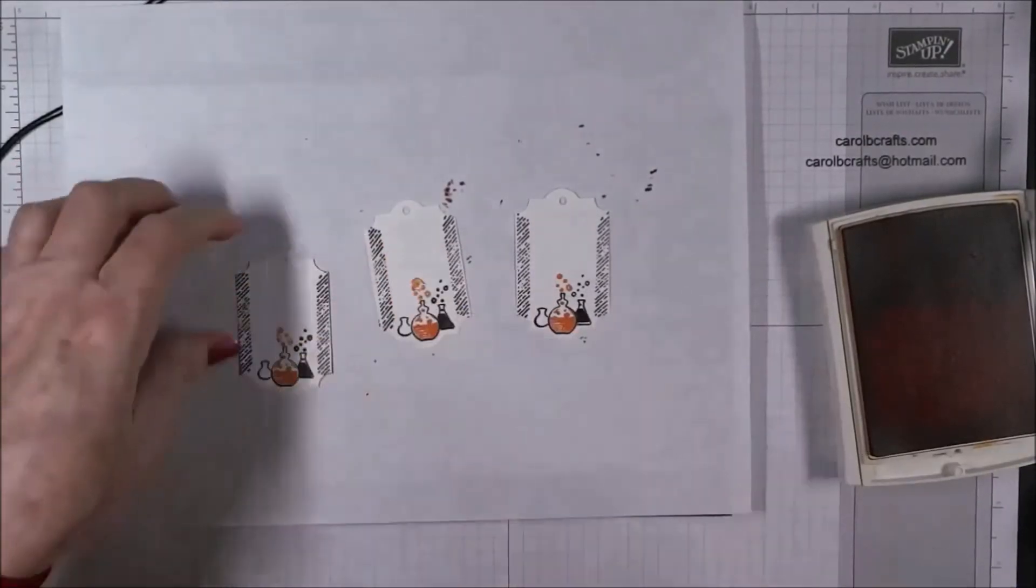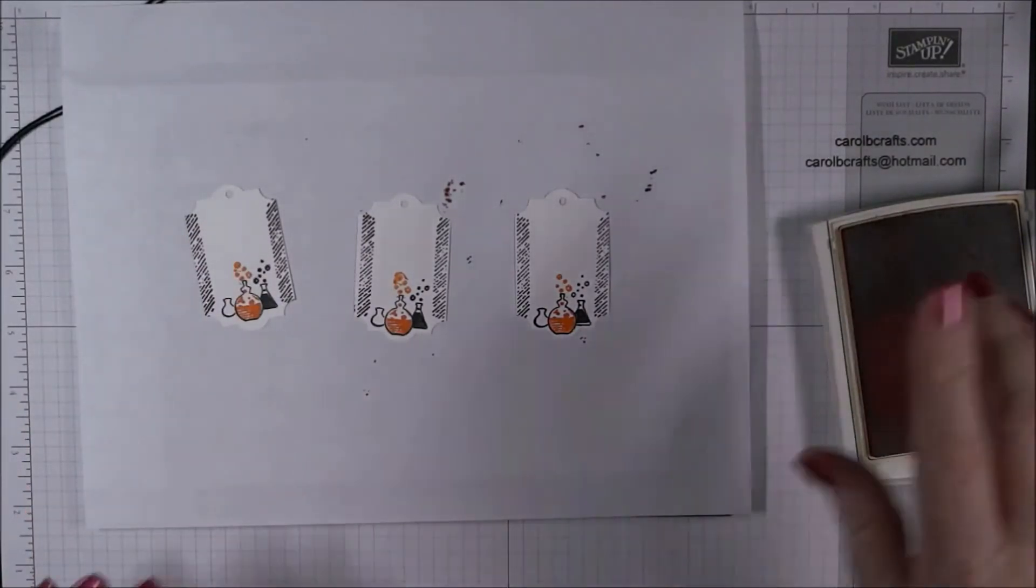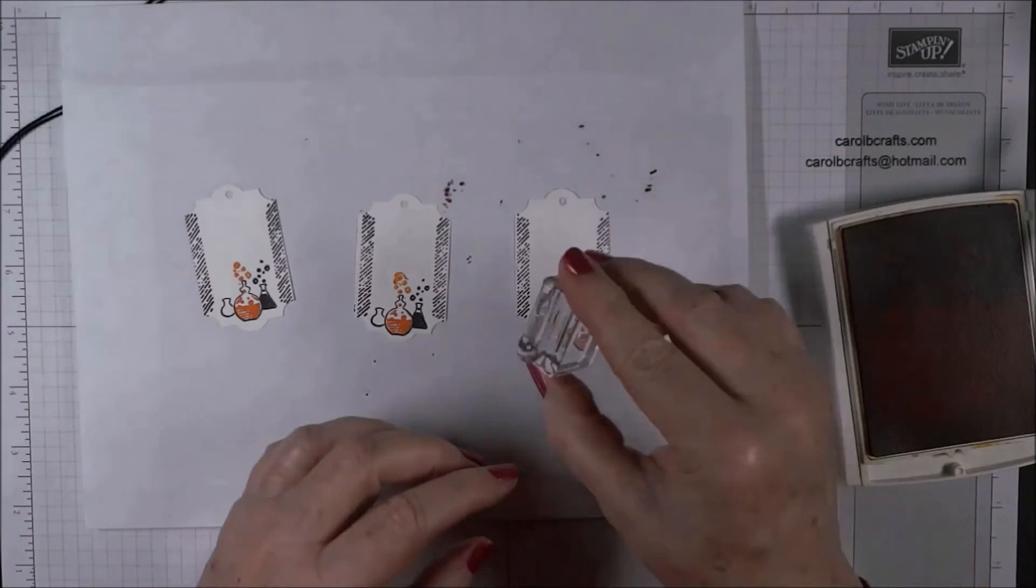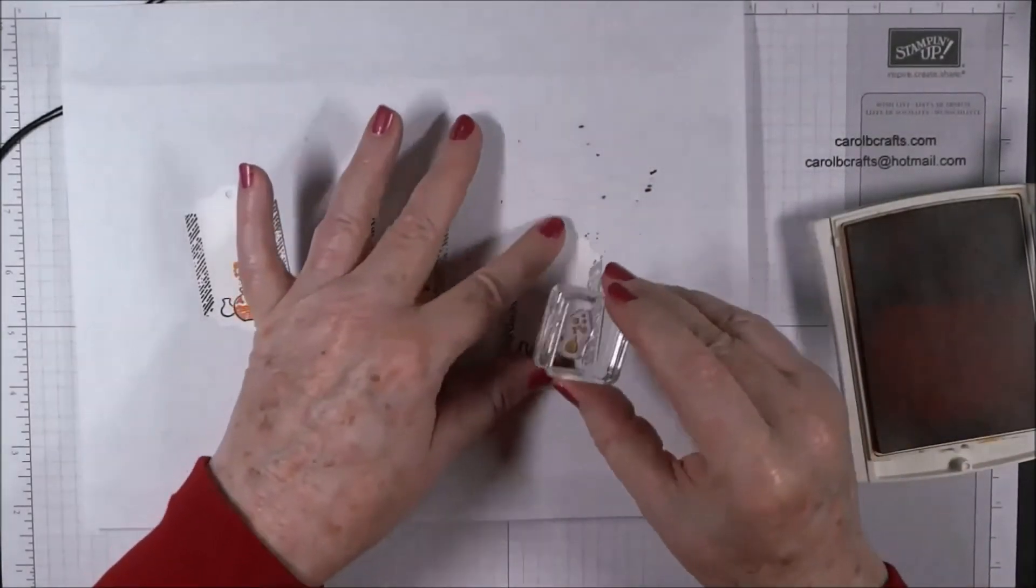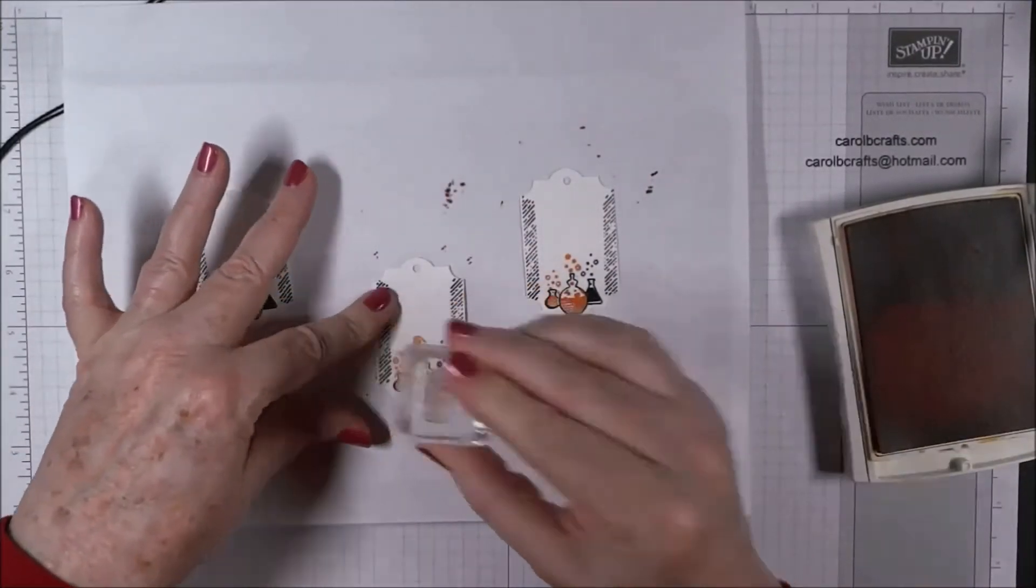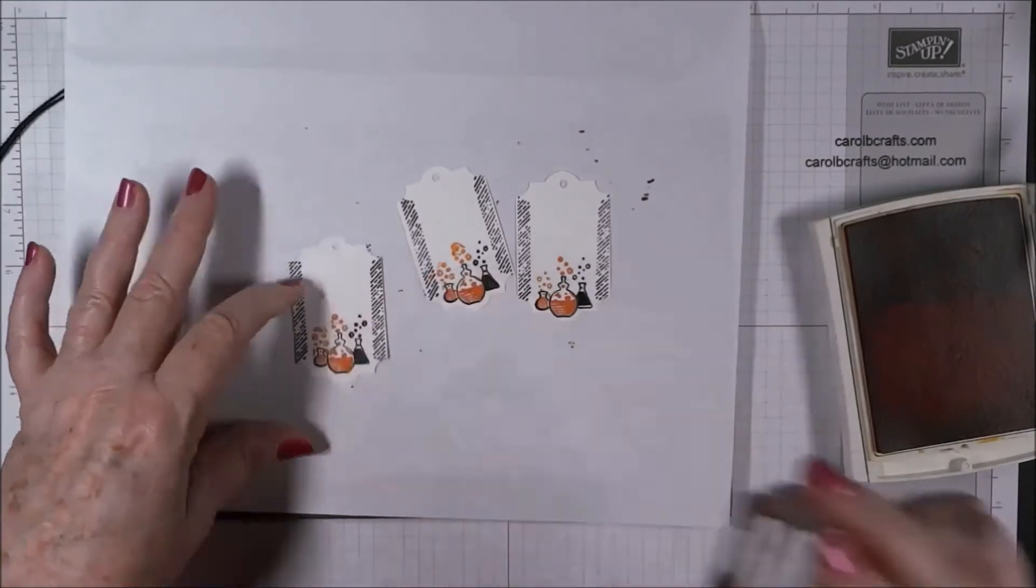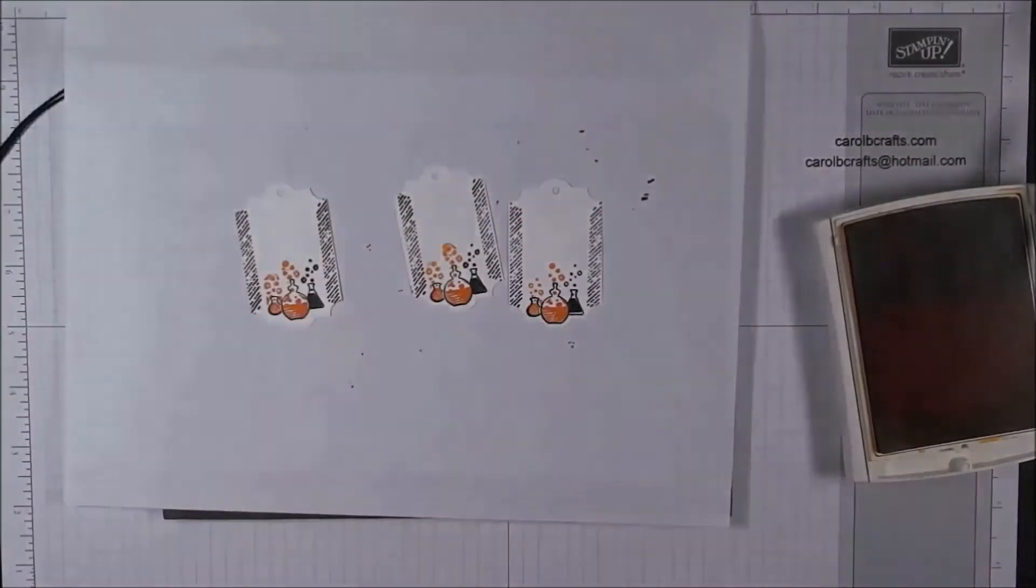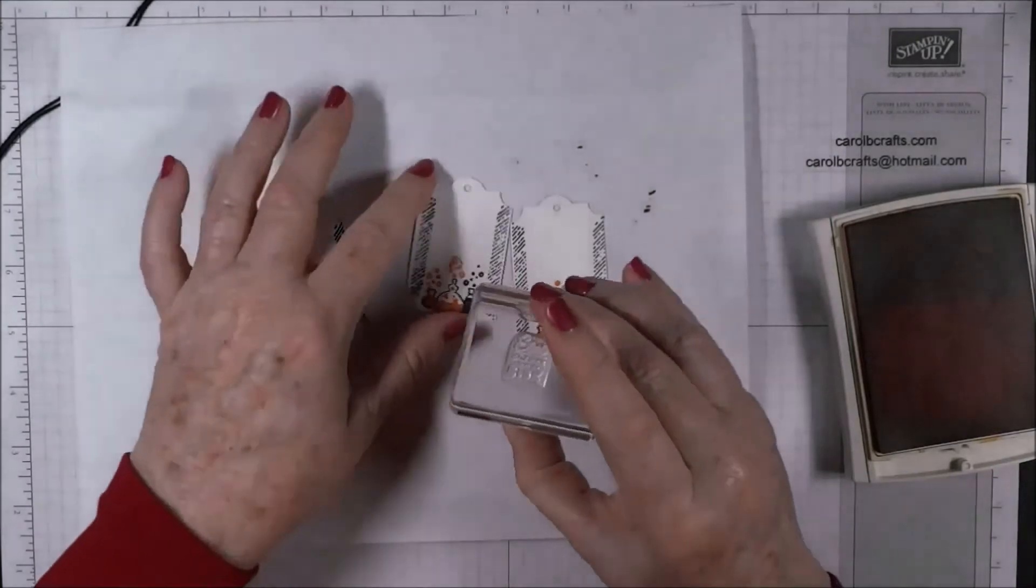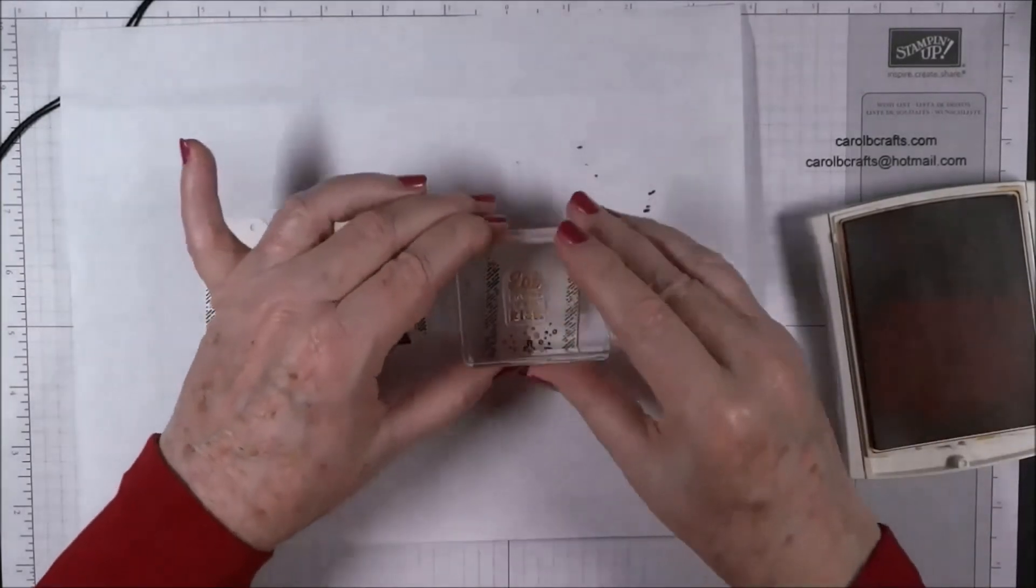It's really hard to line these up. Okay, and then the last thing we need is our sentiment. Well, we have one more little vial, it's the littlest one. There's such cute little images. Now we're ready for our sentiment and the sentiment is eat at your own risk. That just goes right above here.